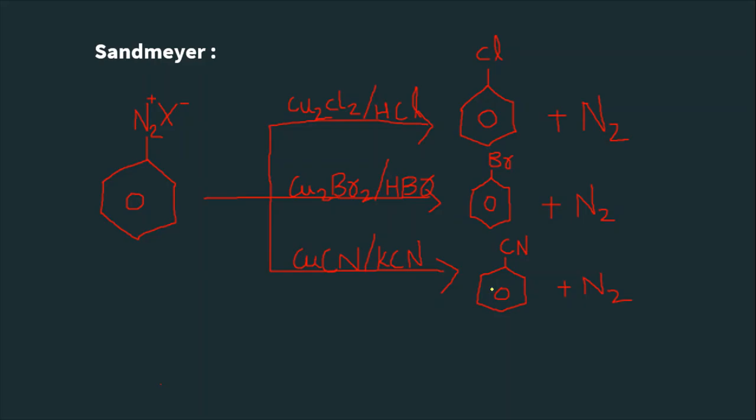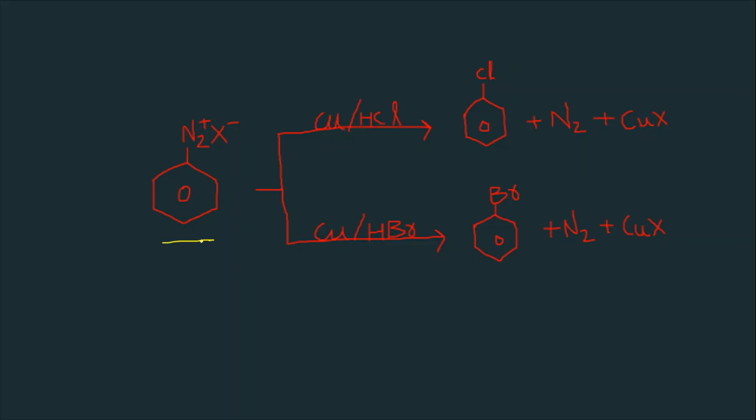Now let's step into Gatterman reaction. This is Gatterman reaction: benzene diazonium chloride in presence of copper powder and corresponding halogen acid gives chlorobenzene and bromobenzene, and byproducts as nitrogen and CuX.